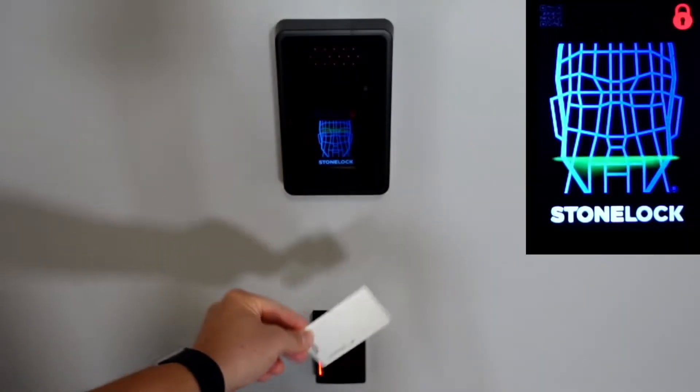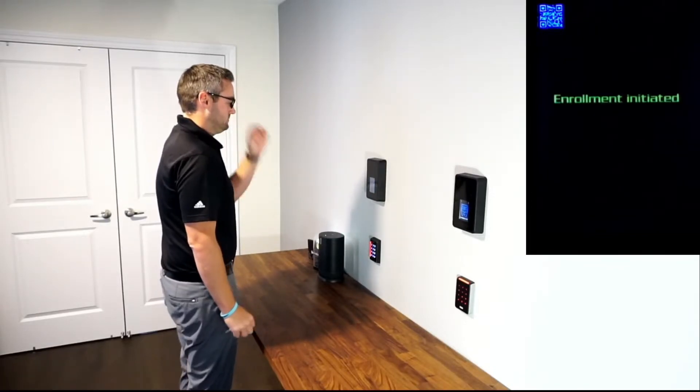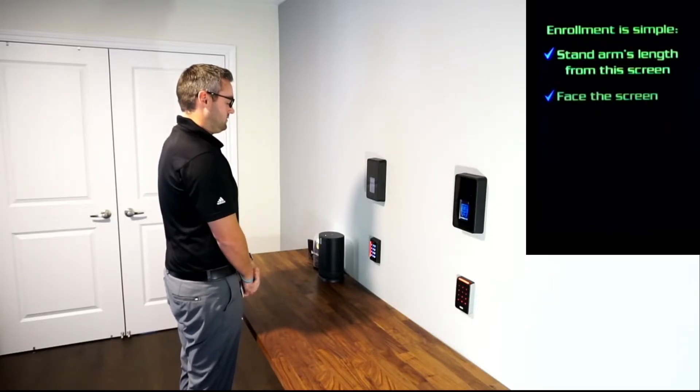To simplify enrollment, we use a process called first read enrollment. All I have to do is take the card that was just programmed for me inside of Avigilon and present it at any reader that has been toggled on to allow for enrollment.